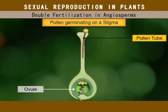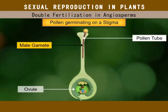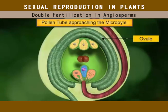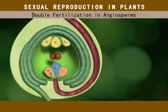The pollen tube containing the male gametes then secretes hydrolytic enzymes, which help to digest the tissues of the style as it travels down and enters the ovule through the micropyle.